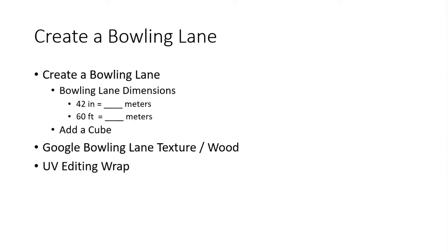I'm going to create this lane out of a cube. We could Google the specific dimensions, convert them to meters, and add those in, or we could just do it to scale by looking at what seems right in our scene. I actually tried the real dimensions and it looked like the bowling alley was about a mile long compared to our pins, so I'm just going to do it by eyeball.